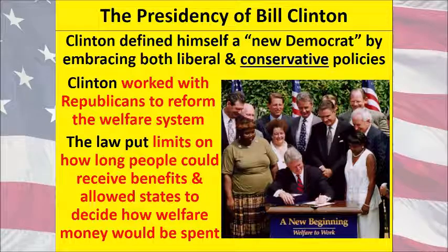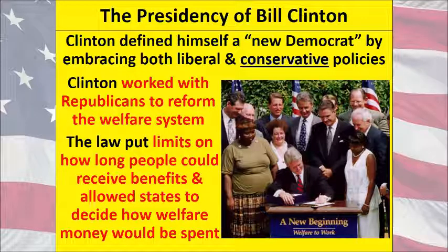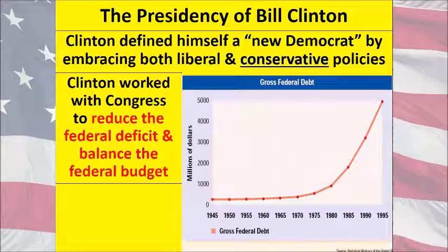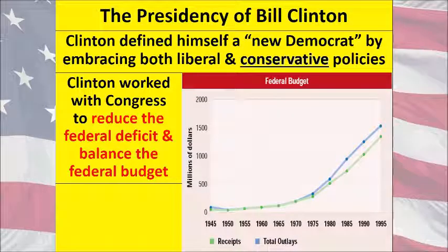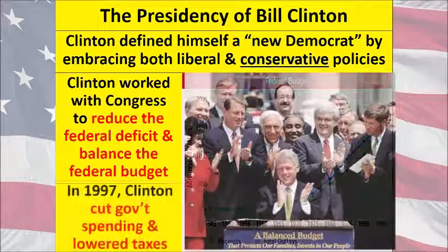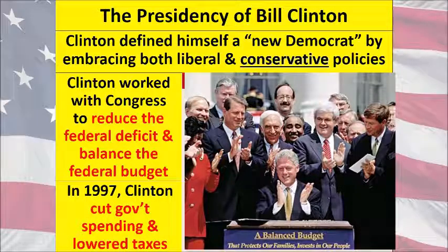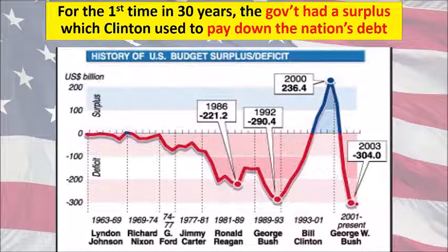On the conservative side, Clinton worked with Republicans to reform the welfare system, placing limits on how long people could receive benefits and allowing states to decide how welfare money would be spent. He also worked with Congress to reduce the federal deficit and balance the federal budget, and was quite successful with that — as the graphs and data show.